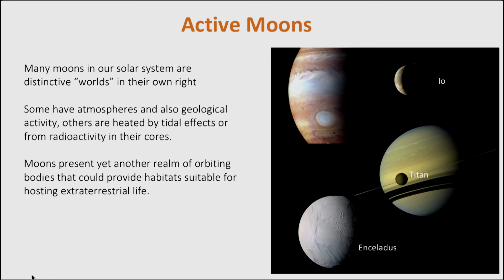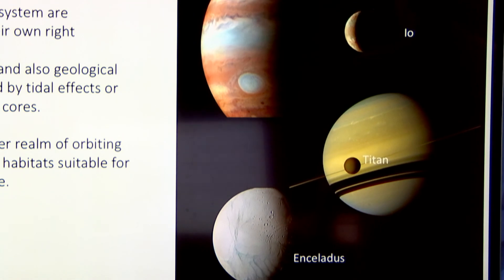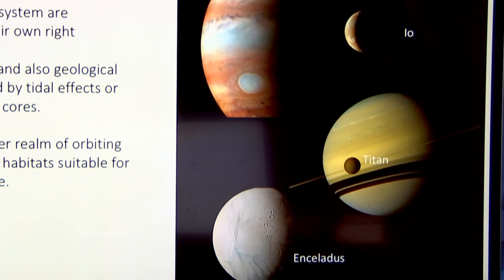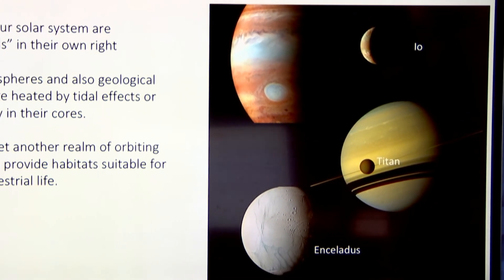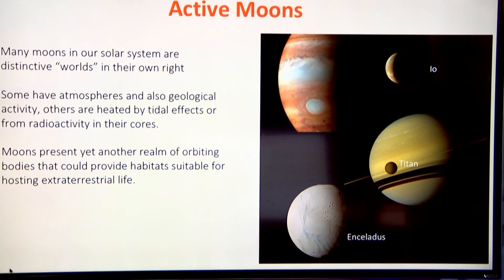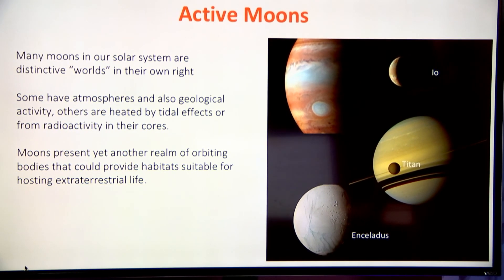Some of the moons have atmospheres — Titan, for example, has an atmosphere made of the same substance you're breathing right now, nitrogen, and an atmosphere as thick as the Earth's. Some have geological activity, others are heated by tidal effects, and so they have a lot of chemical dynamic processes going on in their surfaces and interiors. They also have radioactivity in their cores that acts as a heating source even when they're far from the Sun. So moons represent another category of objects that could potentially host extraterrestrial life.